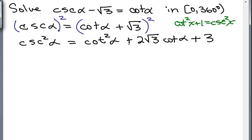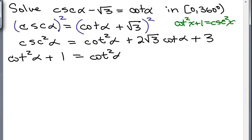On the right side I've got everything in terms of cotangent, but not on the left side. So I'm going to use the formula that cosecant squared x equals cotangent squared x plus 1. So let's write the left side as cotangent squared alpha plus 1, and then copy the right-hand side. Hopefully you recognize this as a quadratic where instead of x I've got cotangent of alpha.